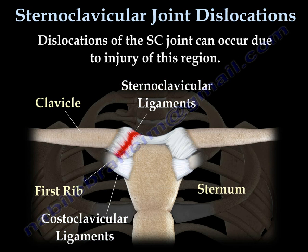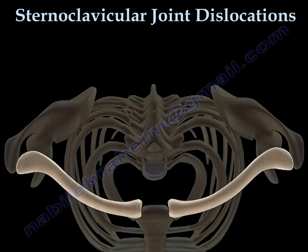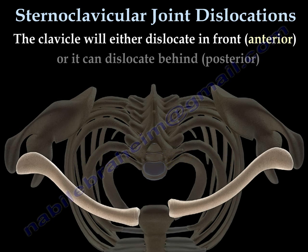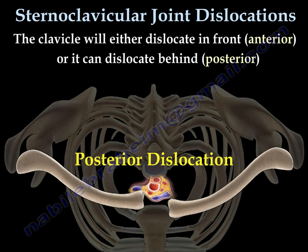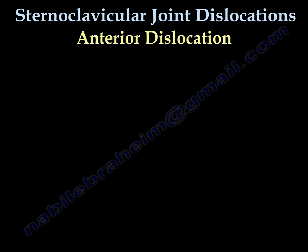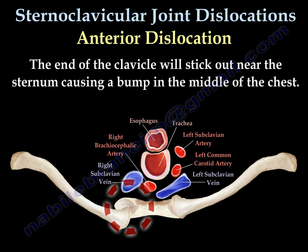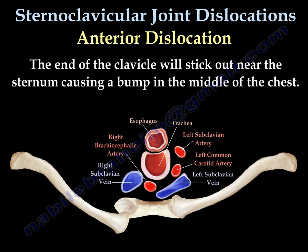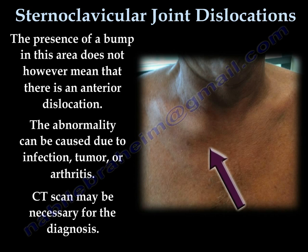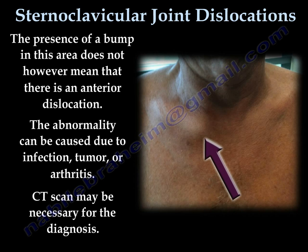Injury to these ligaments can cause dislocation of the joint. The clavicle can either dislocate anteriorly or posteriorly. In anterior dislocation, the end of the clavicle will stick out near the sternum, causing a bump in the middle of the chest. Just because the patient has a bump, it doesn't mean there is an anterior dislocation — this abnormality can also be caused by infection, tumor, or arthritis.